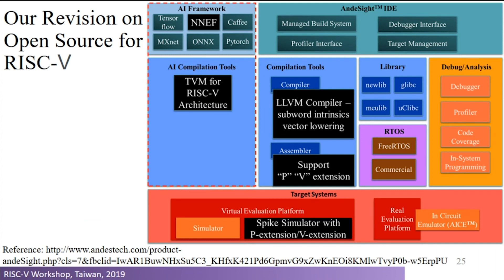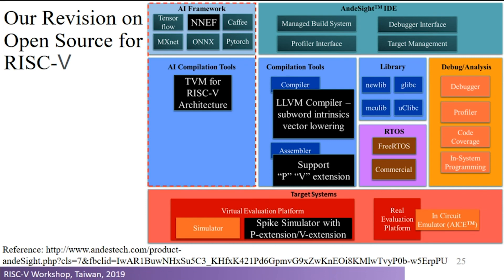This is our revision on the open source RISC-V ecosystem. From the top AI framework layer, we also include NNEF — a Khronos standard AI model format — and created a converter to convert NNEF into ONNX so it can be read by TVM. We enabled TVM to support the RISC-V architecture. For the compiler part, we modified LLVM to support SIMD intrinsics and vector lowering functions. For the assembler, we use the binutils to support the P extension. For the simulator, we obtained the ANDES simulator from Andes Technology and also modified the open-source Spike simulator to add P extension and V extension instructions.